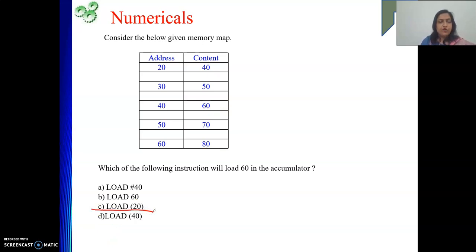We can see for load within bracket 40 also. Within bracket 40 means it is indirect mode. 40 is holding 60. At address 60, we have the value 80. We don't want to load 80. Rather, we want to load 60. So our option C is the correct option. This much is there in this video. Hope you have understood these numericals. They are just giving a revision to our previous numericals. Thank you.